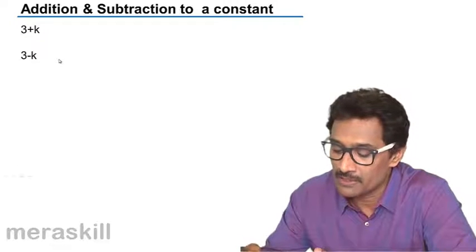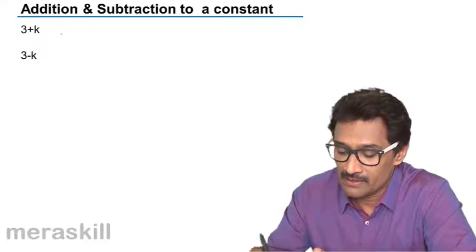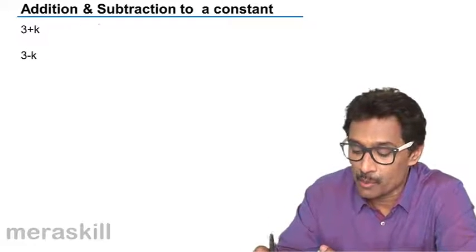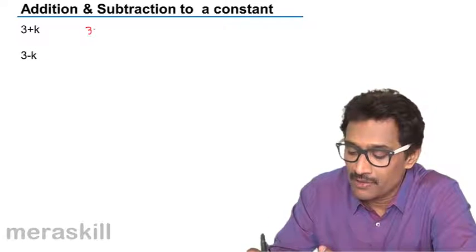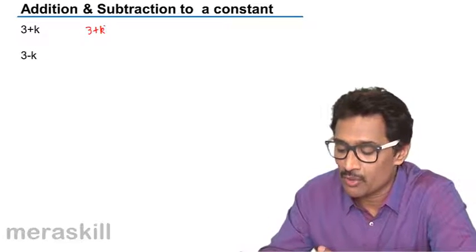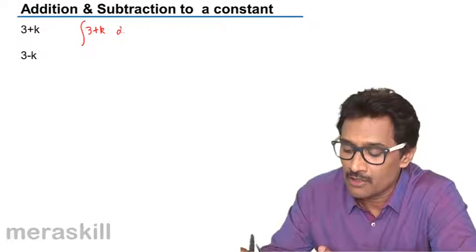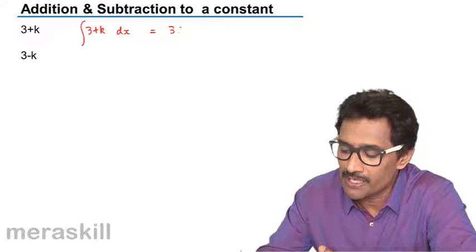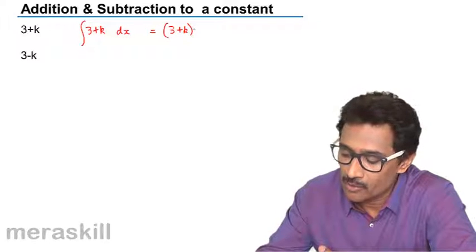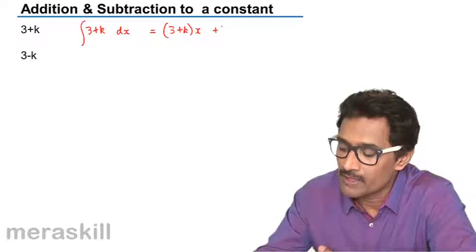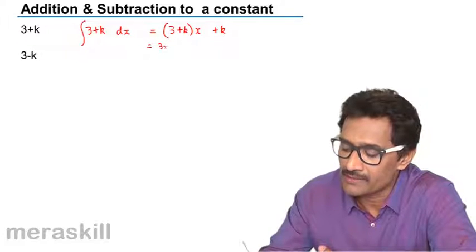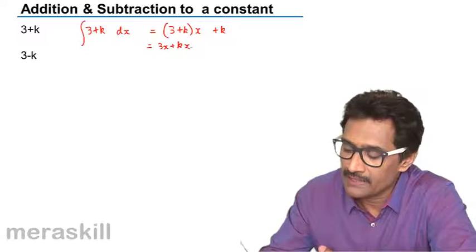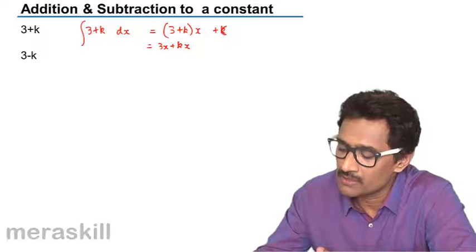Addition and subtraction to a particular constant. So here, suppose you have 3 plus k and you want to find the integral of this. So it's going to be nothing but 3 plus k the whole into x plus c, which is going to be 3x plus kx plus some other constant, say c.